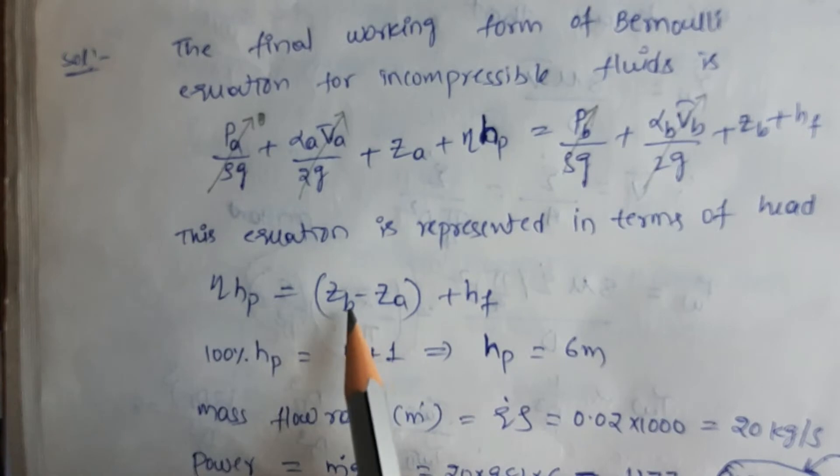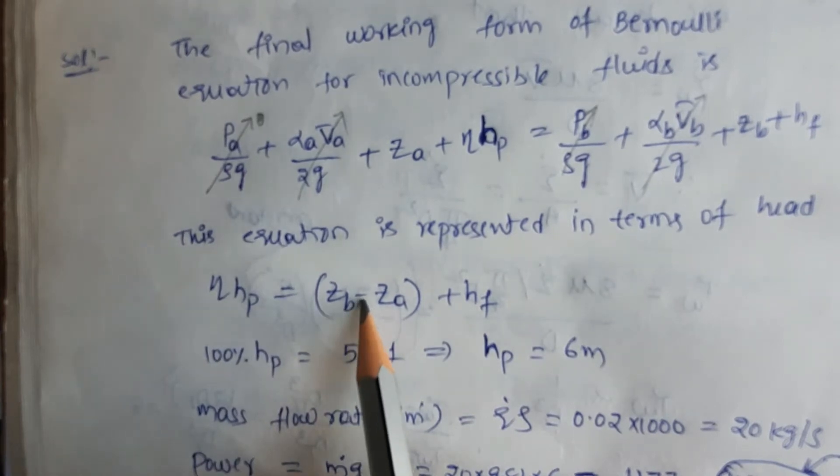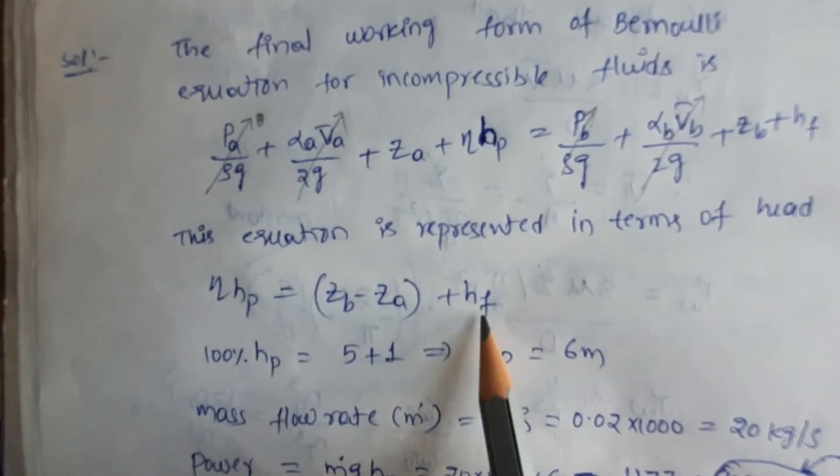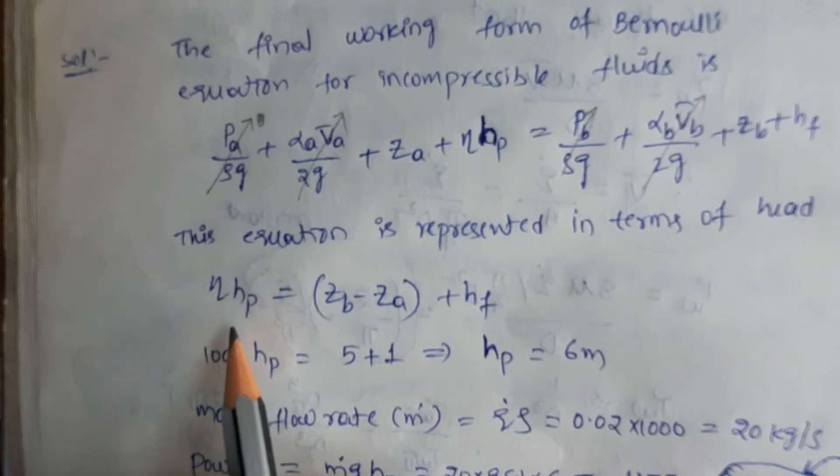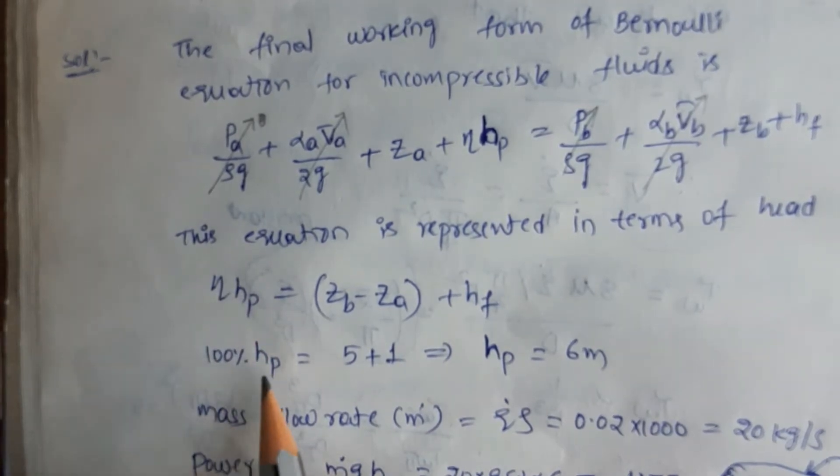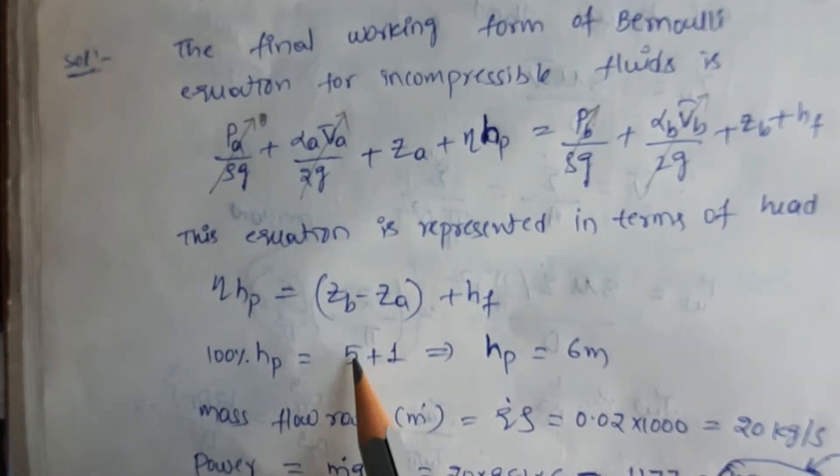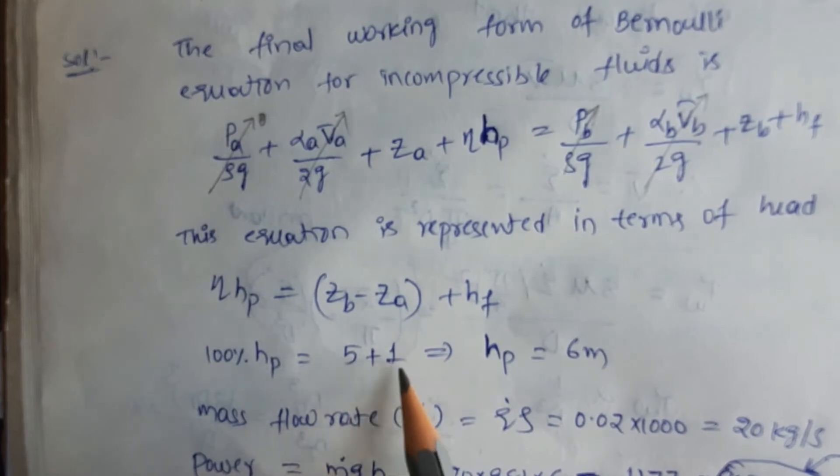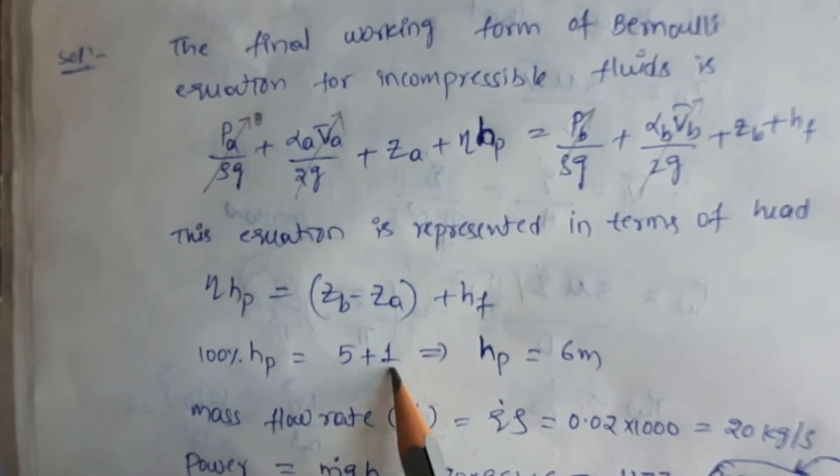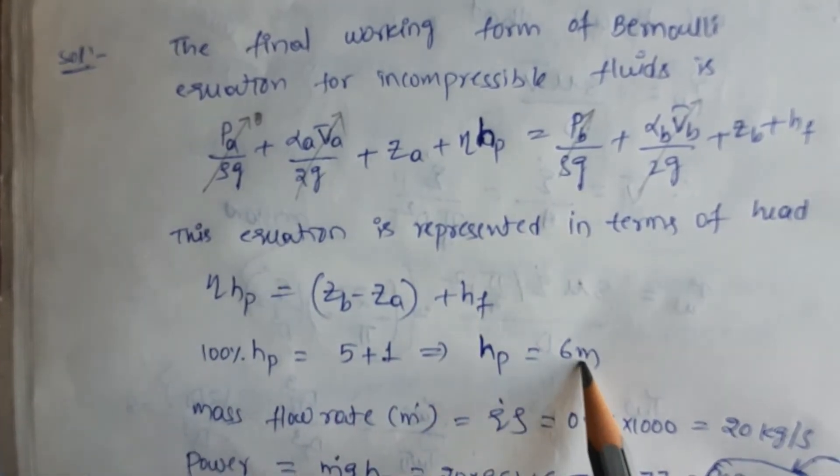η·hp = zb - za + hf. Since the pump has 100% efficiency, η = 1. hp equals the height difference between the two tank surfaces, which is 5 meters, plus hf equals 1 meter. So hp = 6 meters.